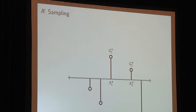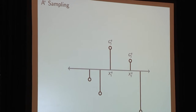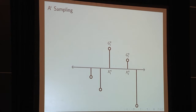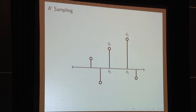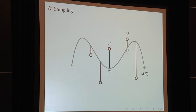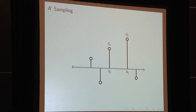Pictorially, suppose these were the top five Gumbels from a realization of a Gumbel process for Q. We add O of X to each value — notice the height of the black bars doesn't change, just their relative position. This transforms it into a Gumbel process for P: we redraw the line and notice the absolute heights don't change, just the relative heights. This is now a realization of a Gumbel process for P.